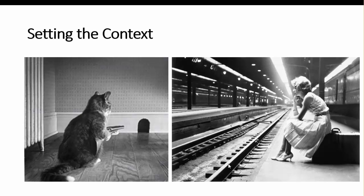Based on that event, these objects in the pictures will take some action. Two important things to understand: one, there is some trigger which invokes or asks them to take an action, and after that they will take an action. This lady waiting for the train — once the train arrives, she will pick up her luggage and get into the train. The cat will shoot the mouse once it comes out. This is the context of Jenkins — this is exactly what Jenkins does. Jenkins will also wait. This lady and this cat are both representing Jenkins.